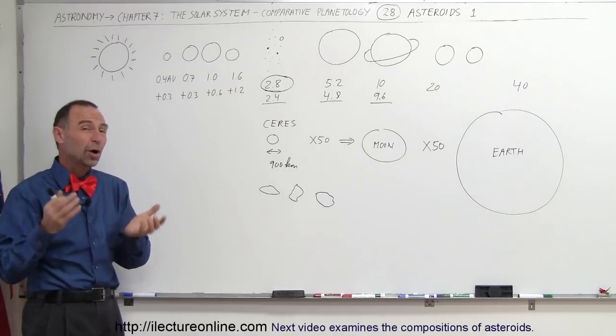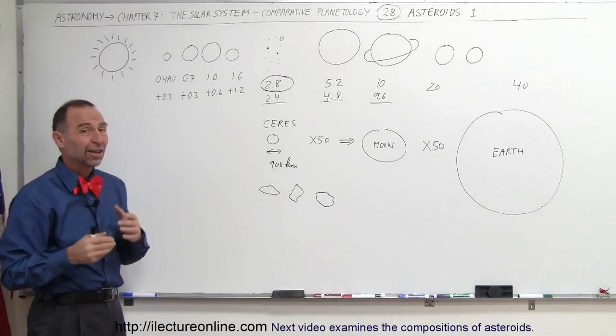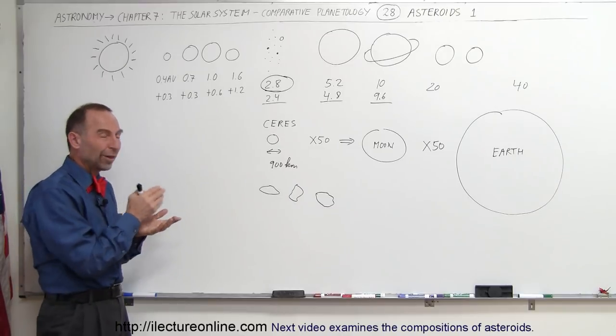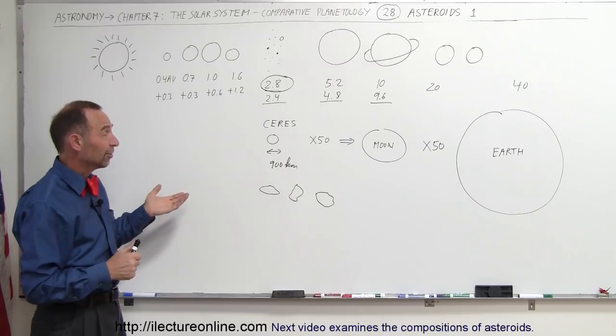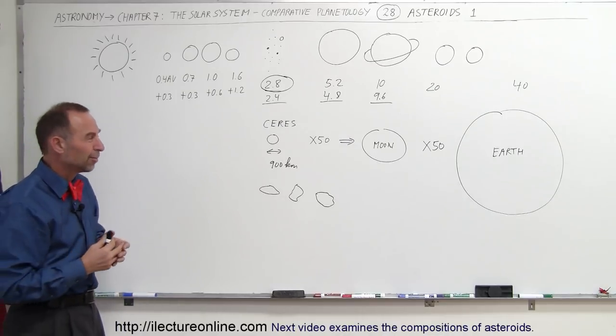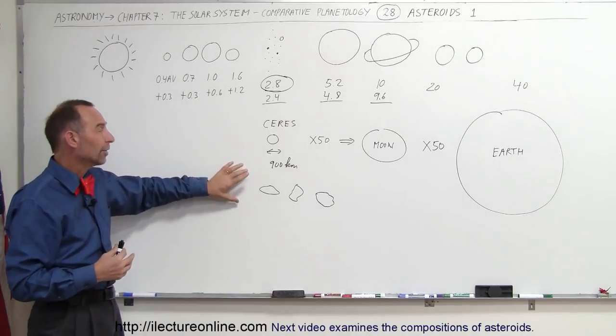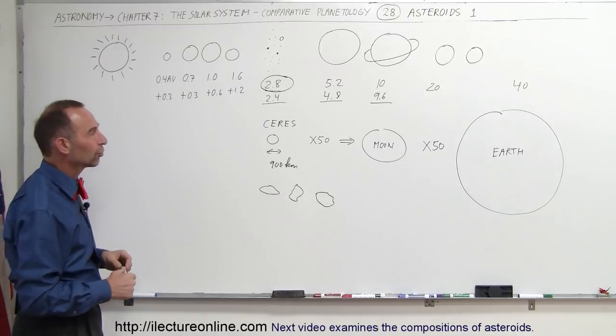Now it turns out, if you were to add up all the mass of all the asteroids and compare that to the mass of Ceres, Ceres contains almost one-third the mass of all the asteroids combined. So Ceres is about almost one-third the mass, and all the others, many many thousands, presumably millions of asteroids out there, together form a mass a little bit more than two-thirds the total mass of all the asteroids.